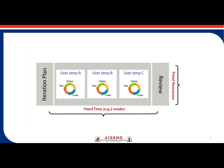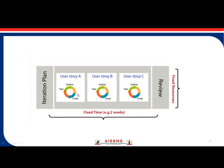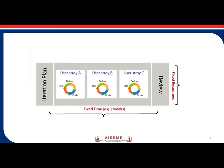Here you can see the diagram. Agile methodology works in iterations — continuous iterations. We first have an iteration plan. There are user stories: user story A, user story B, and user story C. For every user story, we have a sprint cycle. A sprint cycle is a time-bound activity that generally varies from two to four weeks, consisting of define, code, and test phases. For each different sprint cycle, we assume a fixed time period of about two weeks with dedicated resources working on those particular iterations.